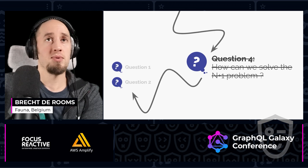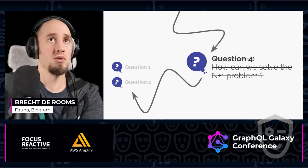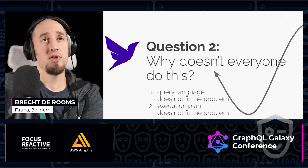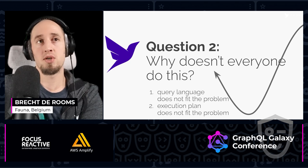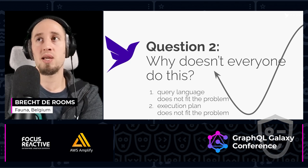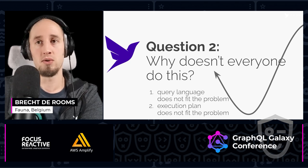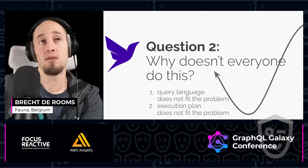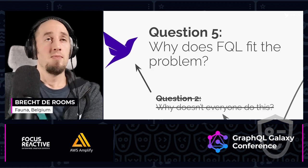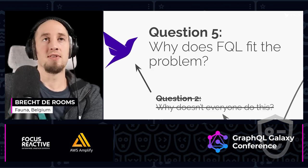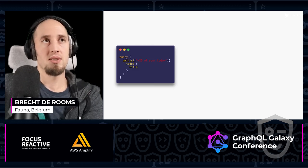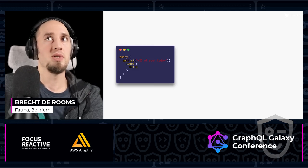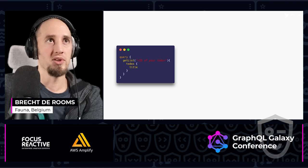How can we solve the n plus 1 problem — so the two solutions? That brings us back to question two: why doesn't everyone do this? We just showed it. The query language might not fit the problem, or the execution plan might not fit the problem. Why does FQL fit the problem? We do it quite differently because it's a different query language and has quite graph-like properties.